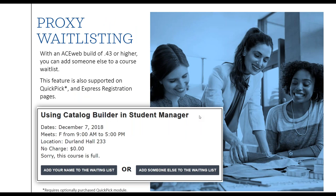Next up is proxy waitlisting, which has been around since around 2017 — debuted at the Scottsdale conference. You probably already have it in your system unless you're running a very old build of ACEweb. All you need is to make sure proxy registration is enabled and waitlisting is enabled for the particular course or courses you want to offer this feature on. This also works with Quick Pick, which is an optional module, and with express registration pages.